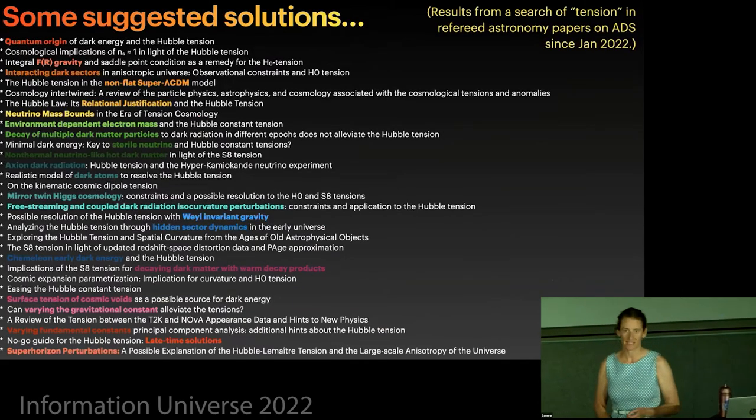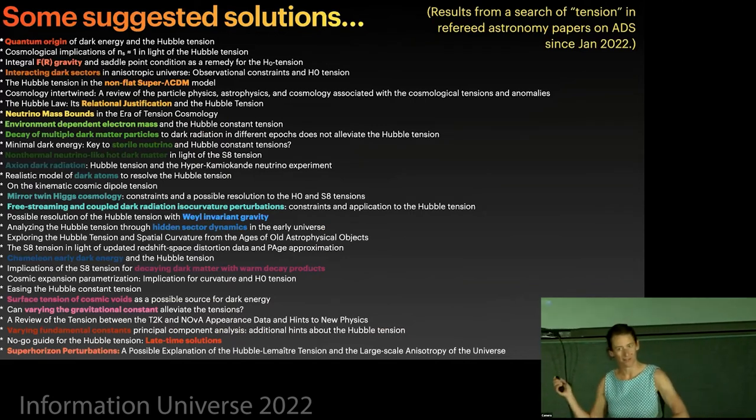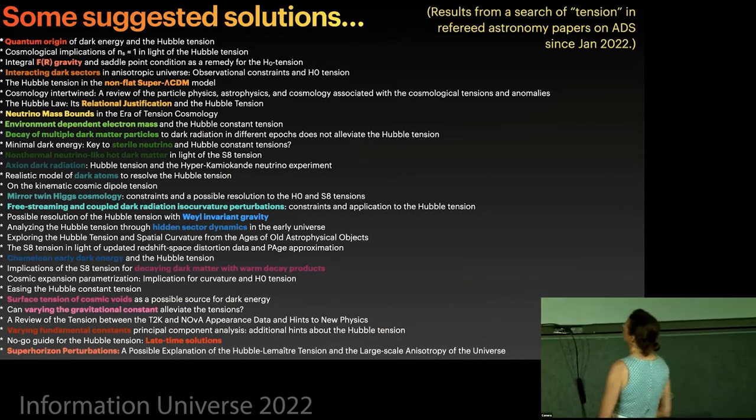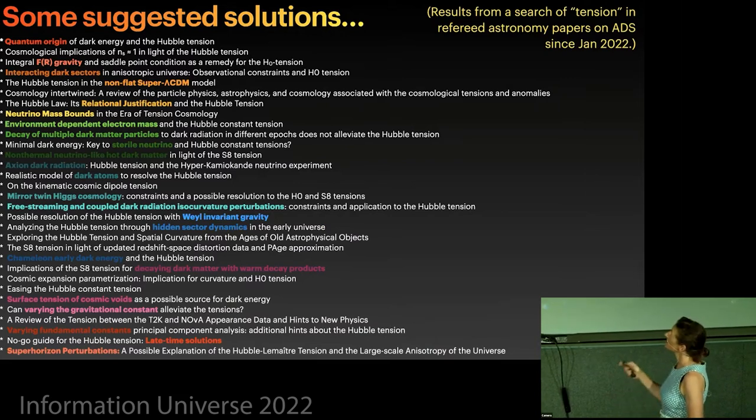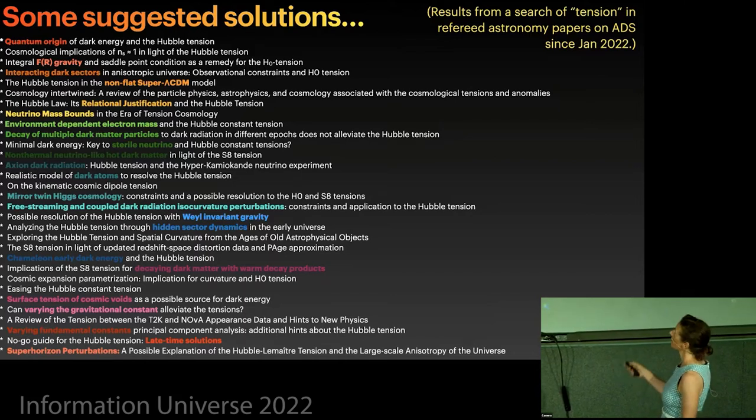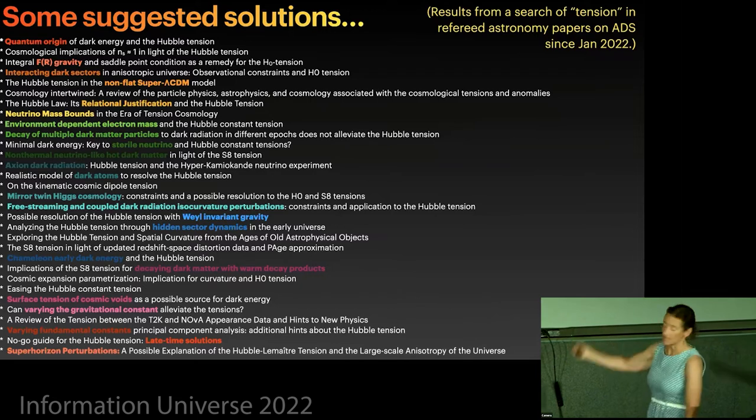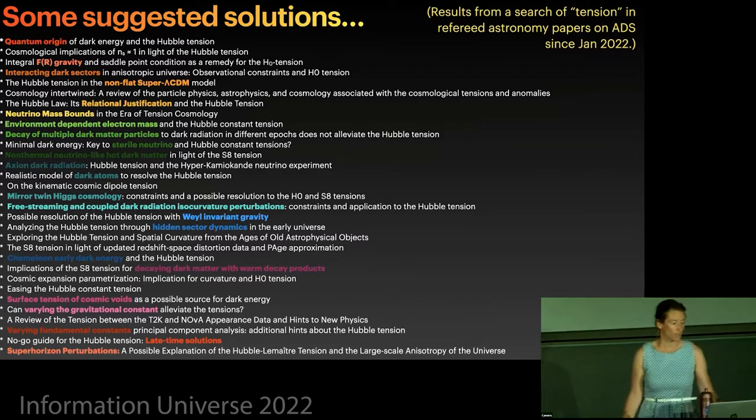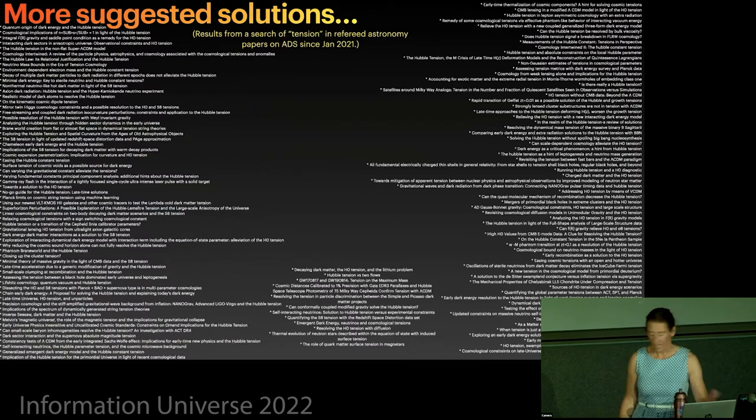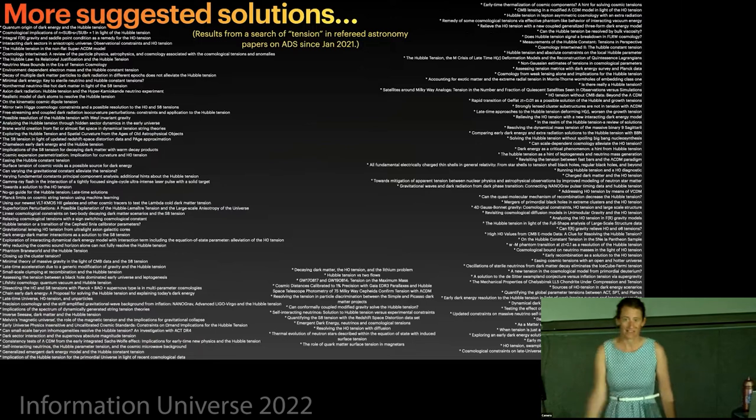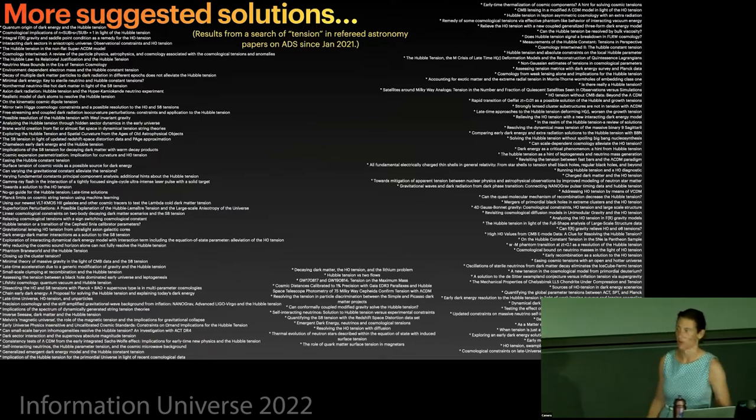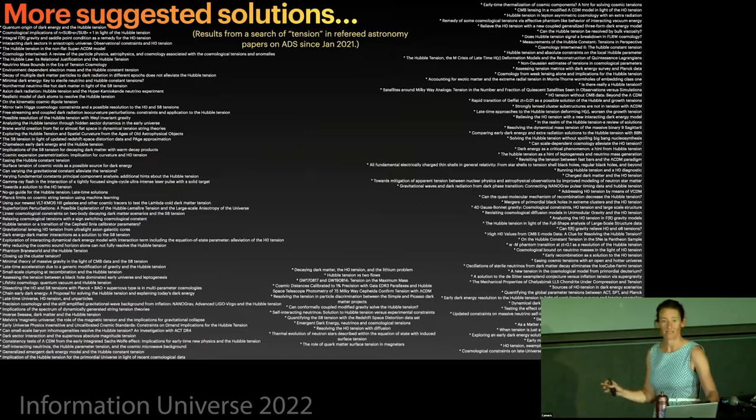For the H naught and S8 tensions, here's just a smattering of solutions that were suggested in the literature in the last little while. This was literally just the results of a search I did on ADS for the last since the beginning of the year. And this was just a selection. I've cut out some, but all sorts of different suggestions theoretically for what could explain this discrepancy. In the past 18 months, since the beginning of 2021, this was just all of the things that had tension in the title, if you have refereed papers in astronomy. So there's a lot of tension in astronomy, basically. We're a very tense bunch.